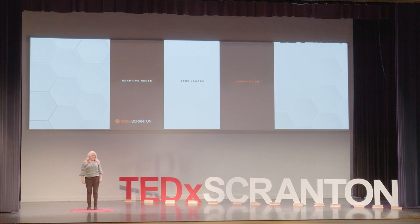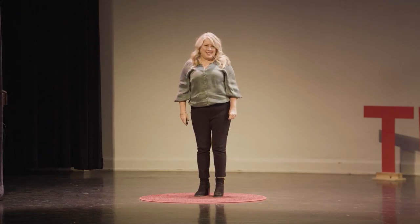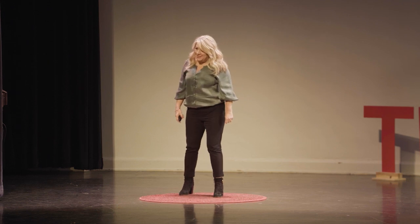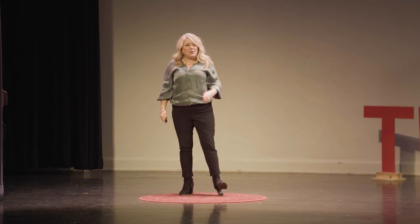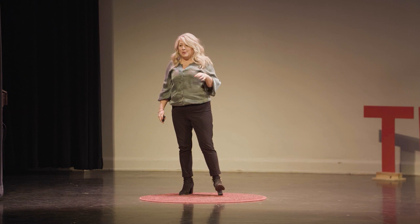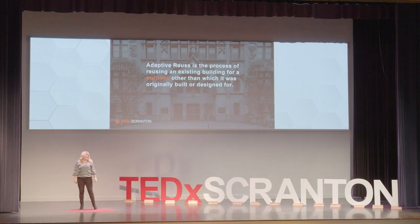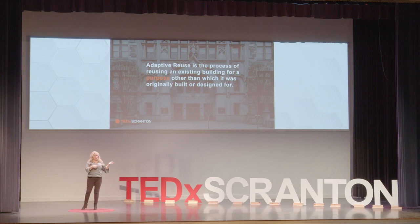Adaptive Reuse, Jane Jacobs, and the Power of Observation. Adaptive reuse is the process of reusing an existing building for a purpose other than which it was initially built or designed for. In terms of architecture, adaptive reuse is when we take something that was once something and give it a new purpose, turning it into something else.